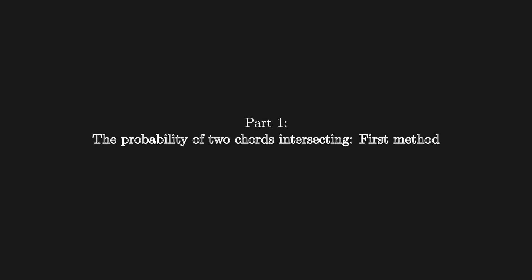Part 1: the probability of two chords intersecting first method. A good starting point is to consider a simpler case. We'll draw just four points instead of 20, resulting in two chords. If we move one of the points around, we can observe where it needs to be so that the chords will intersect.